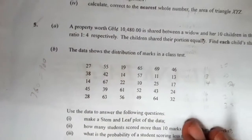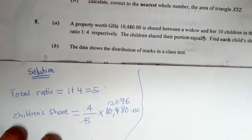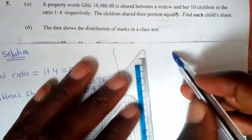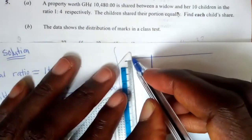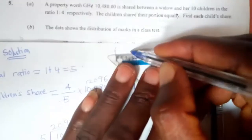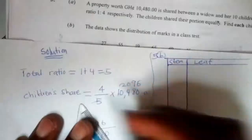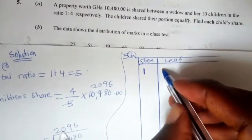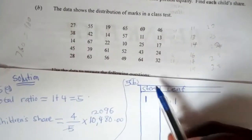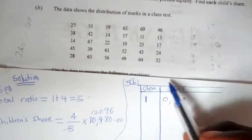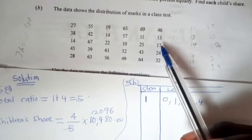Now we have question 5B. We are supposed to make a stem-and-leaf plot from this distribution. For two-digit numbers, the stem is the tens digit and the leaf is the units digit. For stem 1: 10 has leaf 0; 11 has leaf 1; 13 has leaf 3; 14 has leaf 4 — there are two of them; 17 has leaf 7; 19 has leaf 9.